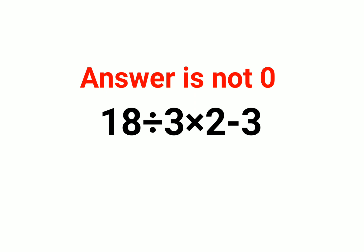Today we are going to understand why the answer for this cannot be 0. A lot of people thought that the answer is 0. The reason for that is they thought we have to do 18 divided by—they did 3 into 2, which is 6, minus 3. So 18 divided by 6 gets you 3, minus 3 gets you the answer as 0, and this is absolutely wrong.